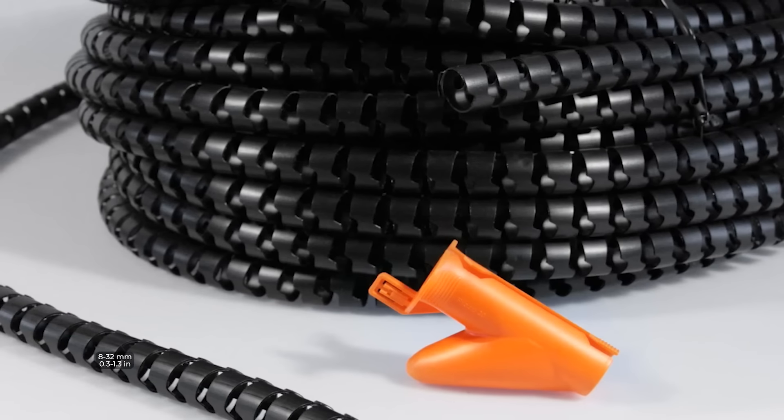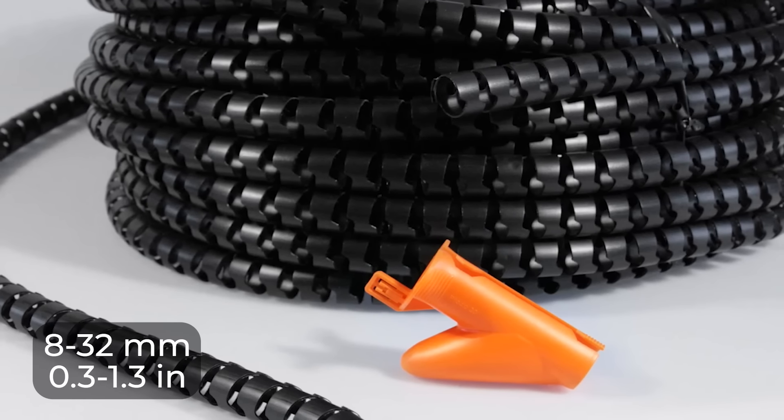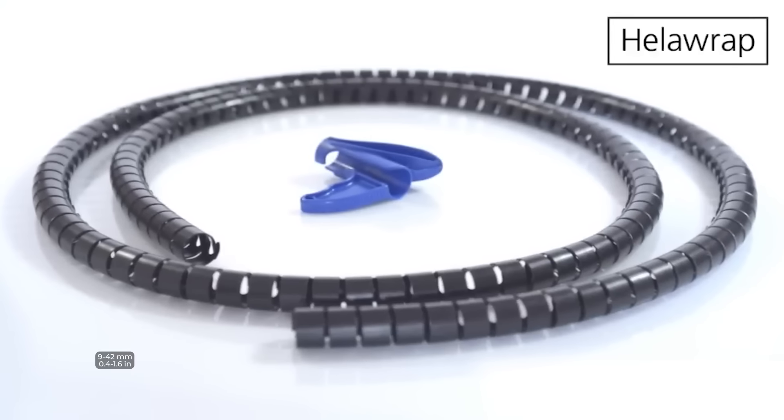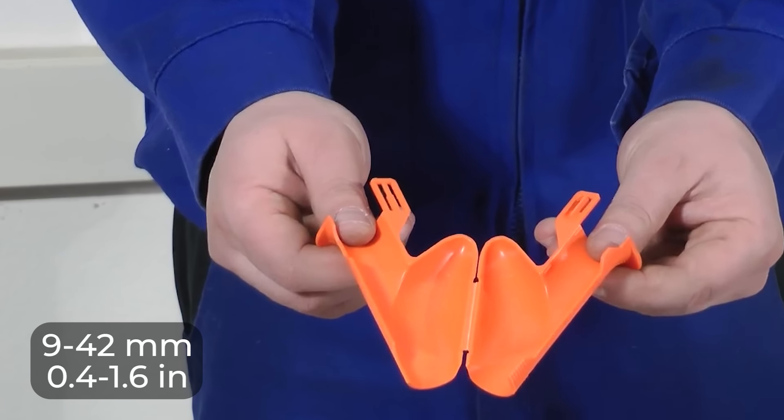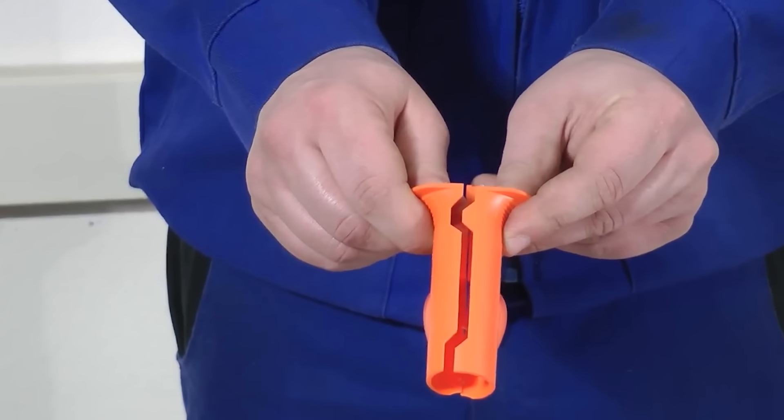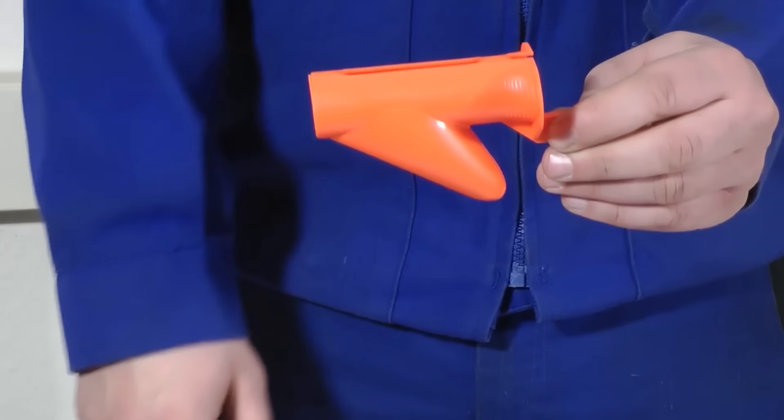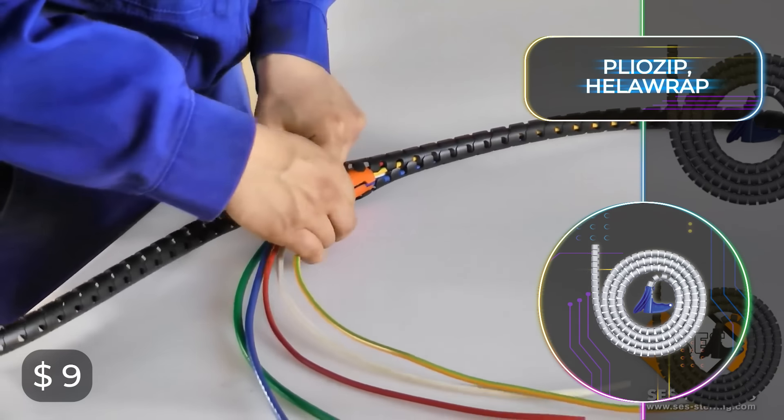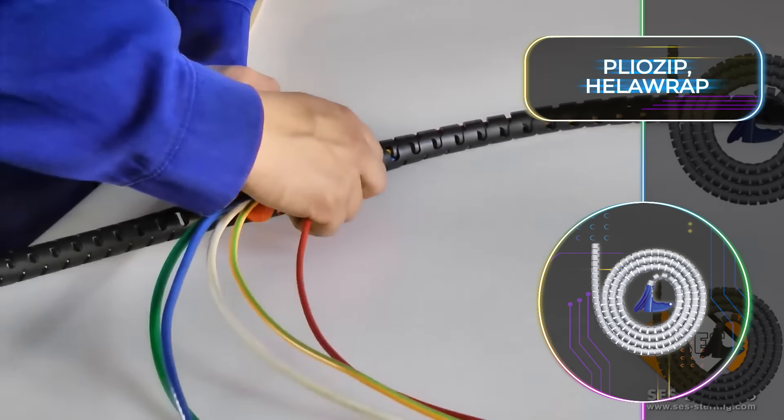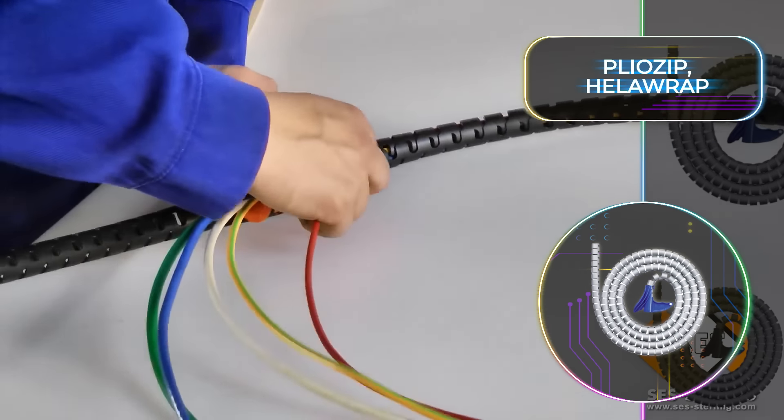If you got options too, there's the Plyo Zip covering diameters from 8 to 32 millimeters or 0.3 to 1.3 inches, or the Heliwrap which handles 9 to 42 millimeters or 0.4 to 1.6 inches. Both options come with a special tool that even beginners can handle like a pro. The installation tool won't break the bank at just $5.50, and the sleeve itself is a steal at $9 per 3.3 feet or one meter. These sleeves aren't just for protection; they also make it a breeze to adjust cable lengths without needing any extra tools.